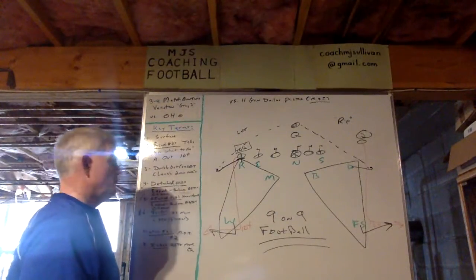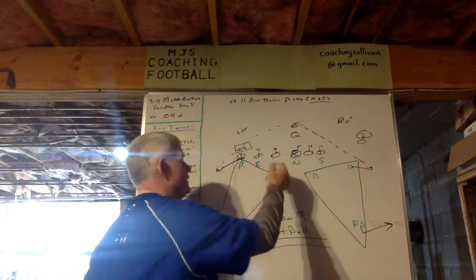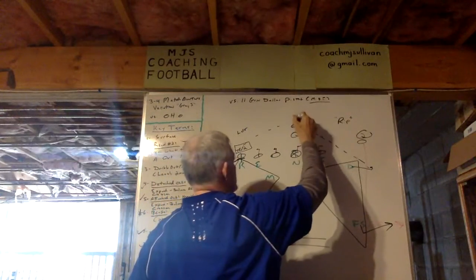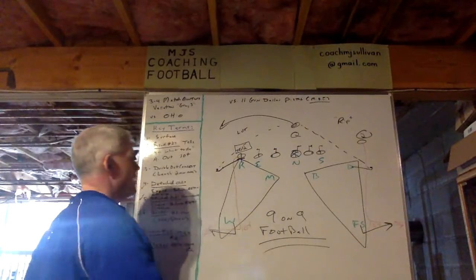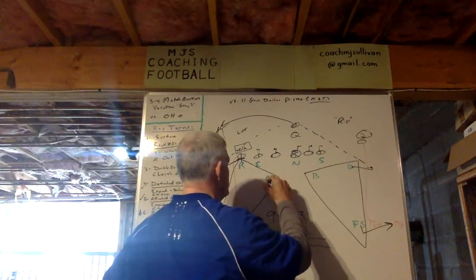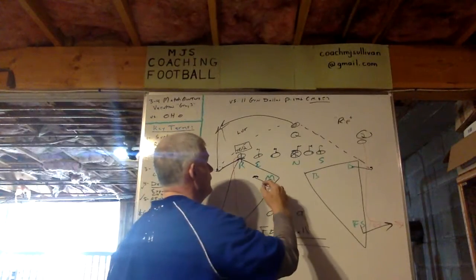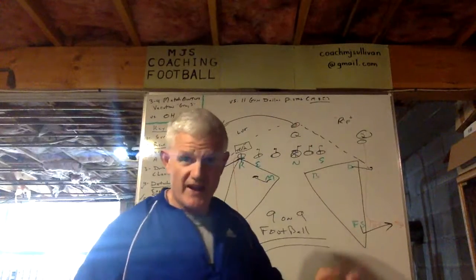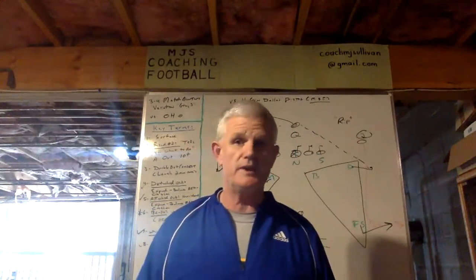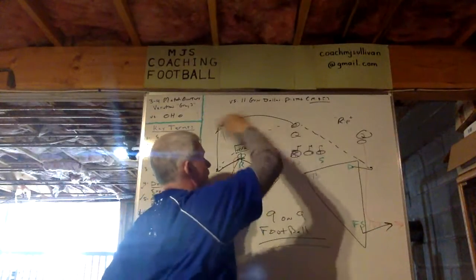For the inside linebackers: both pivot to number two. Since number two is not coming to them, they pivot back. Let's say the running back flares to the Mike — you have a Rover available to go get him. As the ILB starts to go get the back, he'll see a same-color defender chasing it and balance up. If he doesn't see it and goes to get the back anyway, that's fine — don't criticize the kid for making that play. If you do, their head spins and they won't play fast.